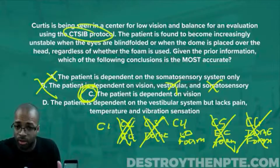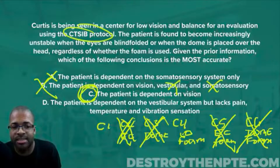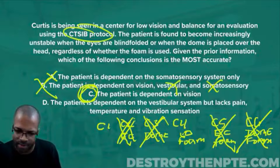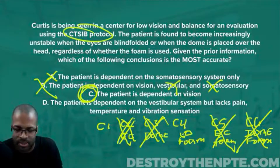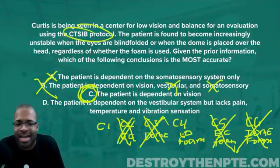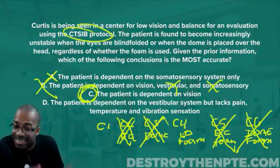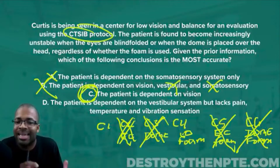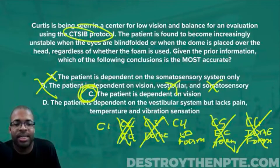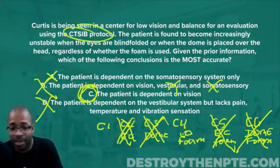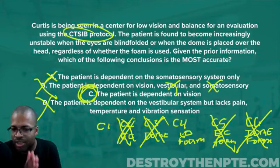Let's confirm by checking Answer D: the patient is dependent on the vestibular system but lacks pain, temperature, and vibration sensation. We already know conditions C5 and C6 test the vestibular system and the patient failed — so they're not dependent on it. Additionally, CTSIB does not test pain, temperature, or vibration sensation; it's not testing the spinothalamic tracts or DCML pathways specifically. D is incorrect. The final answer is C — the patient is dependent on vision.